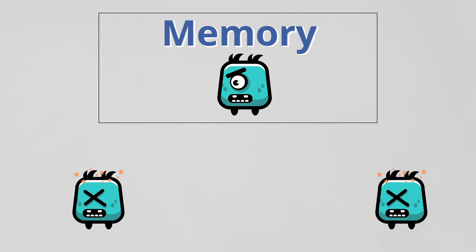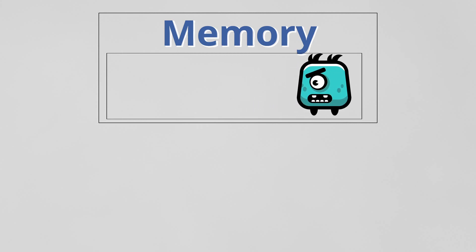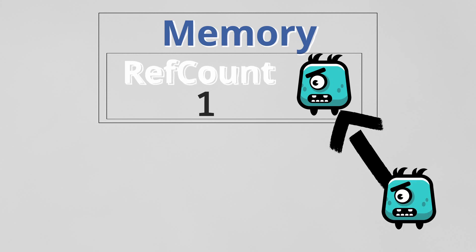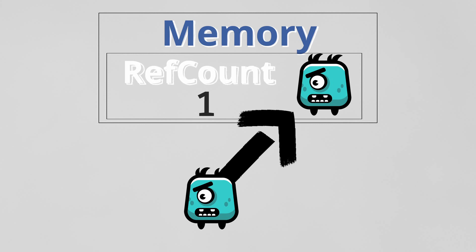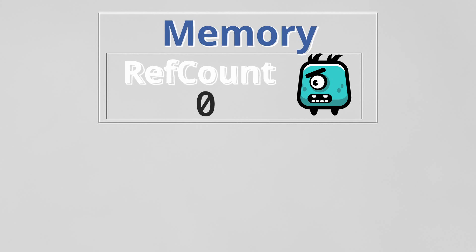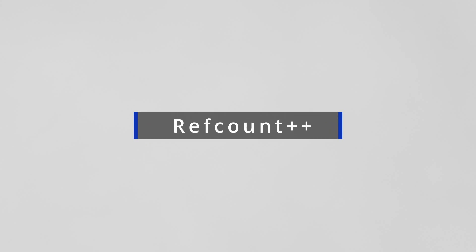When no one uses the resource anymore, we delete it. To do this, we create an integer variable inside the resource and name it ref_count. When the first enemy creates that resource, we increase ref_count by one. When the other enemy uses that resource, we increase it again by one. When the first enemy dies, we decrease ref_count by one, and when the second enemy dies we do the same. When the value of ref_count reaches zero, we free that memory.